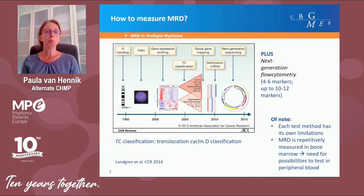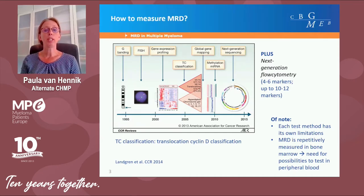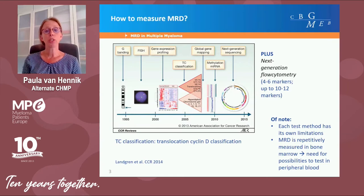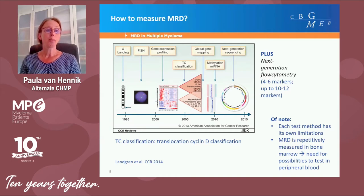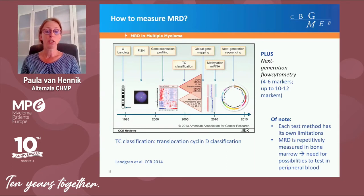How to measure MRD? Currently MRD is measured by next generation flow cytometry or next generation sequencing, which are both very sensitive methods that can detect a very low level of cancer cells among normal cells — up to one in a million. It is important to realize that each test method has its own limitations as well as strengths, and that has to be considered when thinking about what you want to use it for.